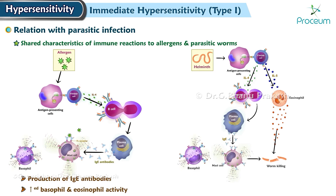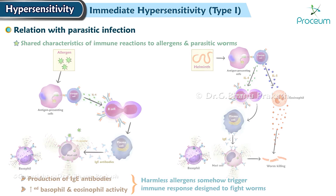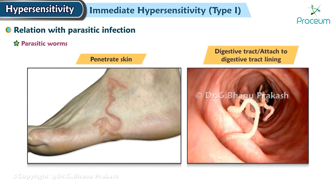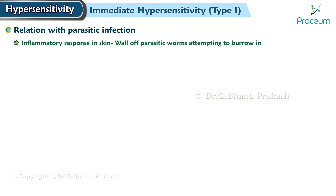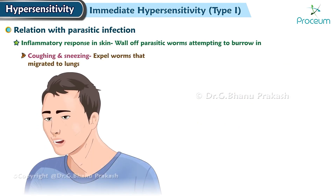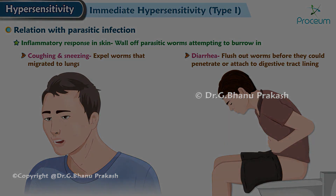This finding has led to the proposal that harmless allergens somehow trigger an immune response designed to fight worms. Parasitic worms can penetrate the skin or digestive tract or can attach to the digestive tract lining. Some worms migrate through the lungs during a part of their life cycle. Scientists suspect the immunoglobulin E response helps ward off these invaders as follows: the inflammatory response in the skin could wall off parasitic worms attempting to burrow in; coughing and sneezing could expel worms that migrated to the lungs; and diarrhea could help flush out worms before they could penetrate or attach to the digestive tract lining. Thank you for listening.